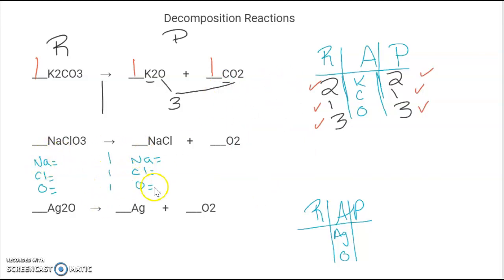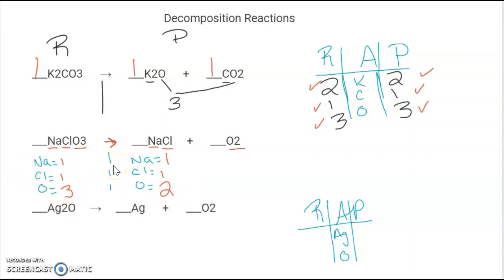The second one we're going to look at doing the equation way. We have one sodium, one chlorine, and O3 — three oxygen on our reactant side. On the product side we have one sodium, one chlorine, and two oxygen. Our sodium and chlorine are equal, but our oxygen we have three and two. So we want to think: what is the least common multiple of three and two, not including one? Their least common multiple is going to be six. So in order to get the O2 to equal six, we would have to put a coefficient of three.